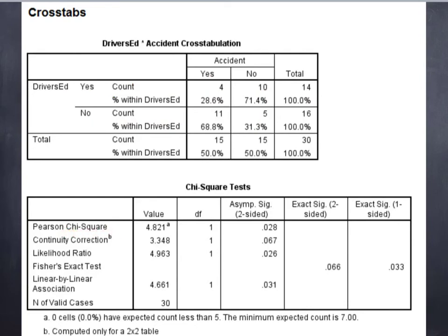What students want to be looking at is the first Pearson chi-square. The chi-square value, written as the Greek letter chi with a square, is 4.821, where the p-value is 0.028 — so p here is less than 0.05, suggesting that we do have significant differences.